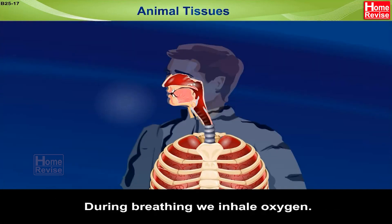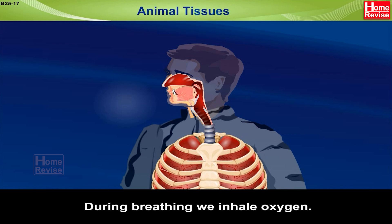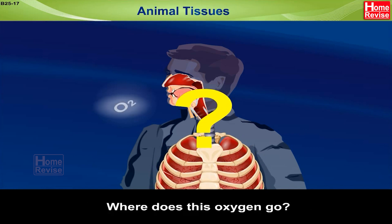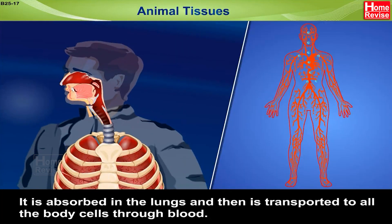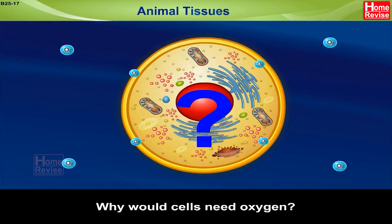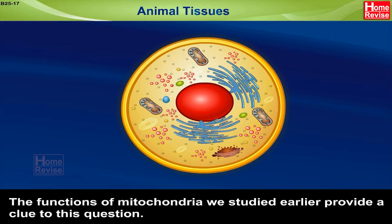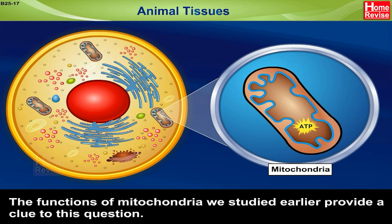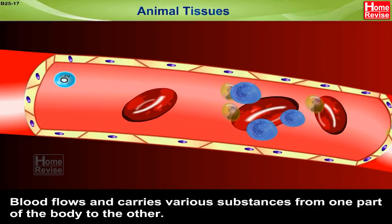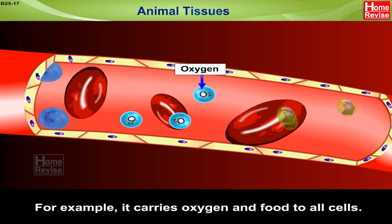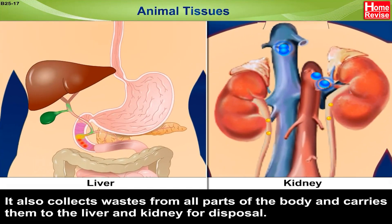Now during breathing, we inhale oxygen. Where does this oxygen go? It is absorbed in the lungs and then transported to all the body cells through blood. Blood flows and carries various substances from one part of the body to the other — for example, oxygen and food to all cells. It also collects wastes from all parts of the body and carries them to the liver and kidney for disposal.